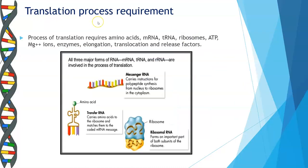Let us have a look at the requirements for the process of translation. The process of translation requires amino acids, mRNA, tRNA, ribosomes, ATP, magnesium ions, enzymes, elongation factors, translocation factors, and release factors.